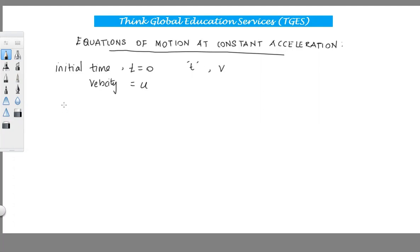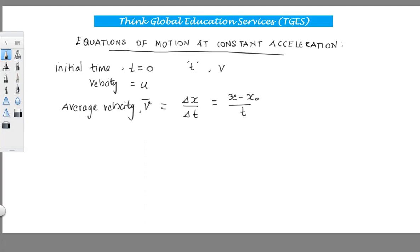Now we can find average velocity. Average velocity, v-bar, is written as change in position over change in time, which can be written as x minus x0 over the time interval, where x is the position at time t and x0 is the initial position. We can also find average velocity using the initial and final velocities: average velocity equals initial velocity plus final velocity over 2.